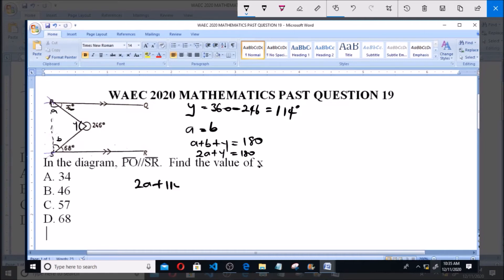And y is equals to 114, so that means 2a plus 114 is equals to 180. So 2a is equals to 180 minus 114, and that is equals to 66 degrees. So a is equal to 66 over 2, and that is equal to 33 degrees.